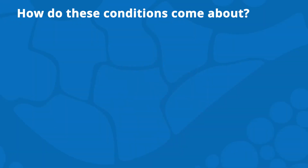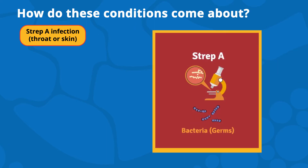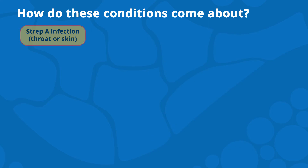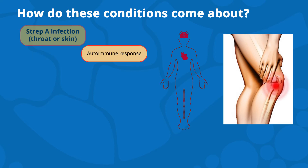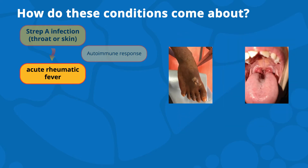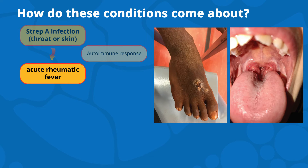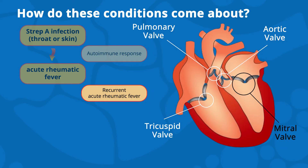Strep A bacteria causes an infection in the throat or skin. If left untreated, a few weeks after the strep A infection there may be an abnormal immune response, and this inflammatory response can result in acute rheumatic fever. Repeated strep A infections can trigger more episodes of acute rheumatic fever, called recurrent acute rheumatic fever. Each time this happens, more damage can be done to the heart valves and rheumatic heart disease can get progressively worse.